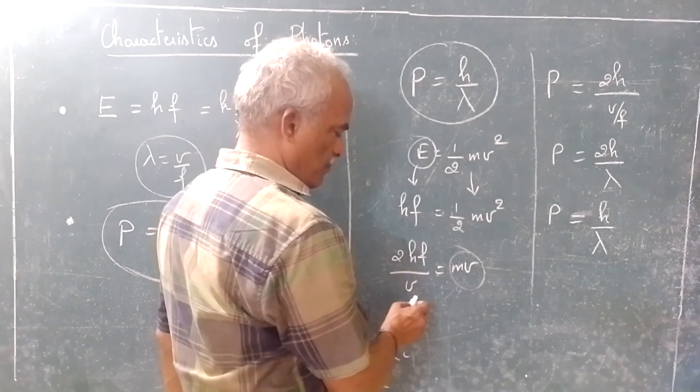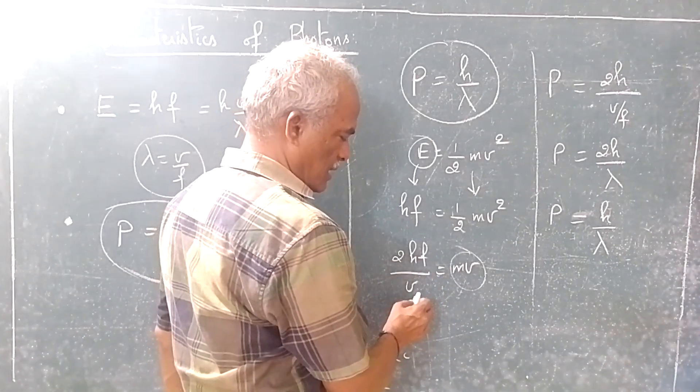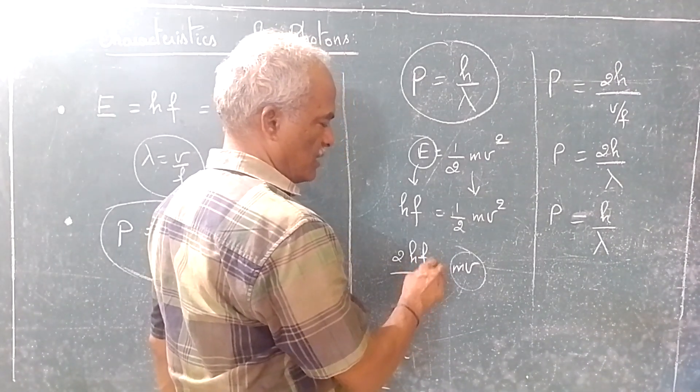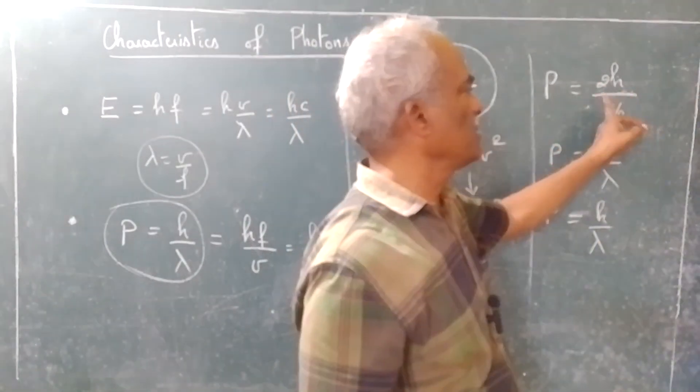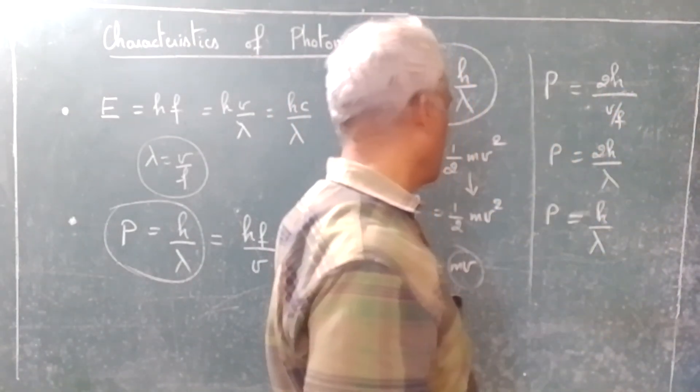Bring this f. This can be written as v by f. Bring this f to the denominator. So, 2h divided by v by f can be written like this.